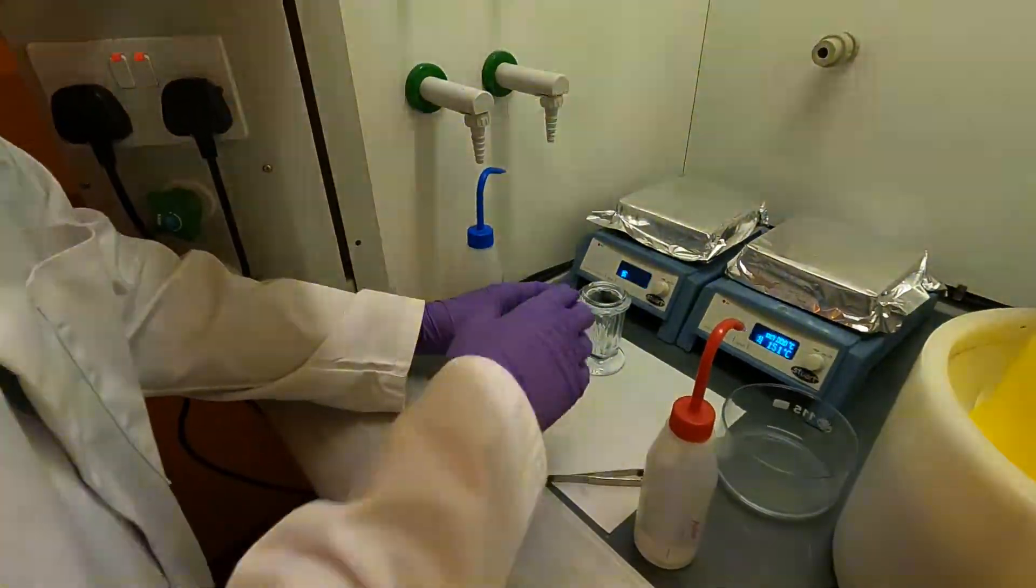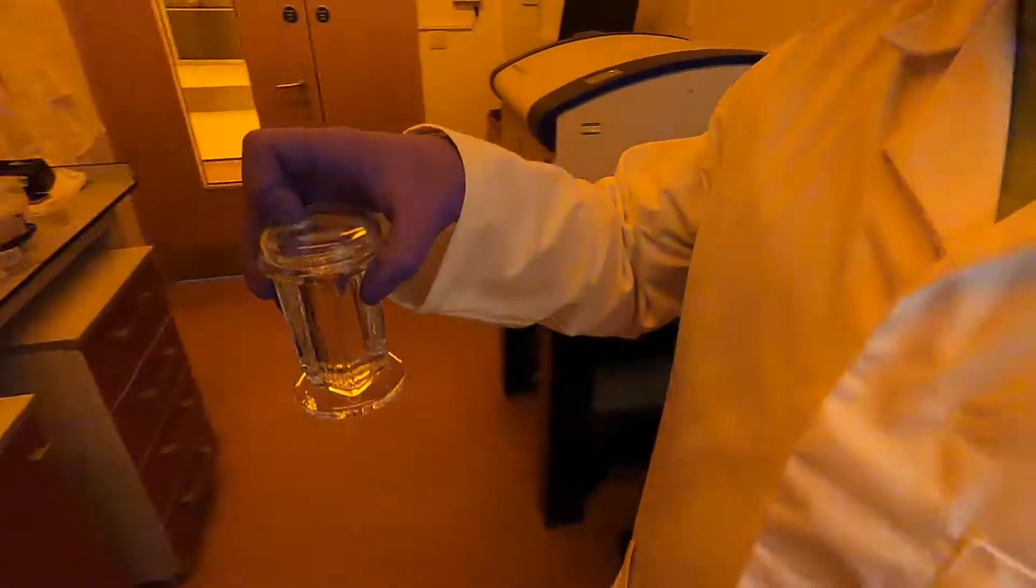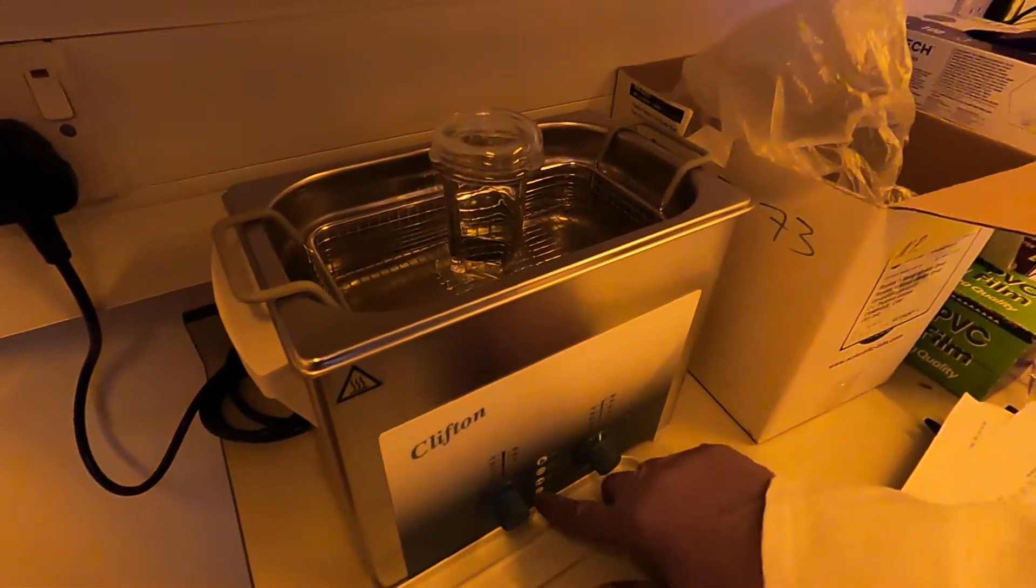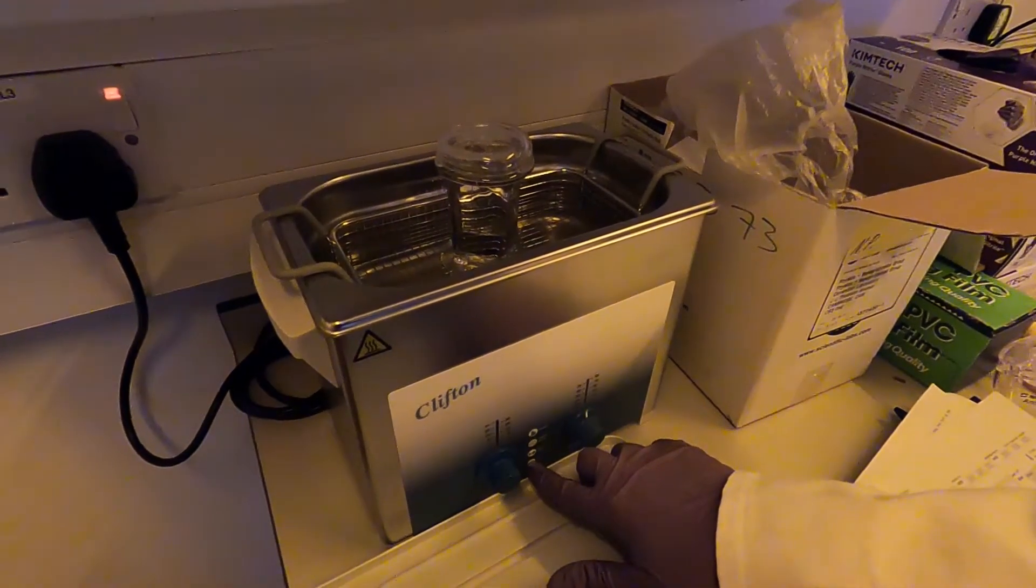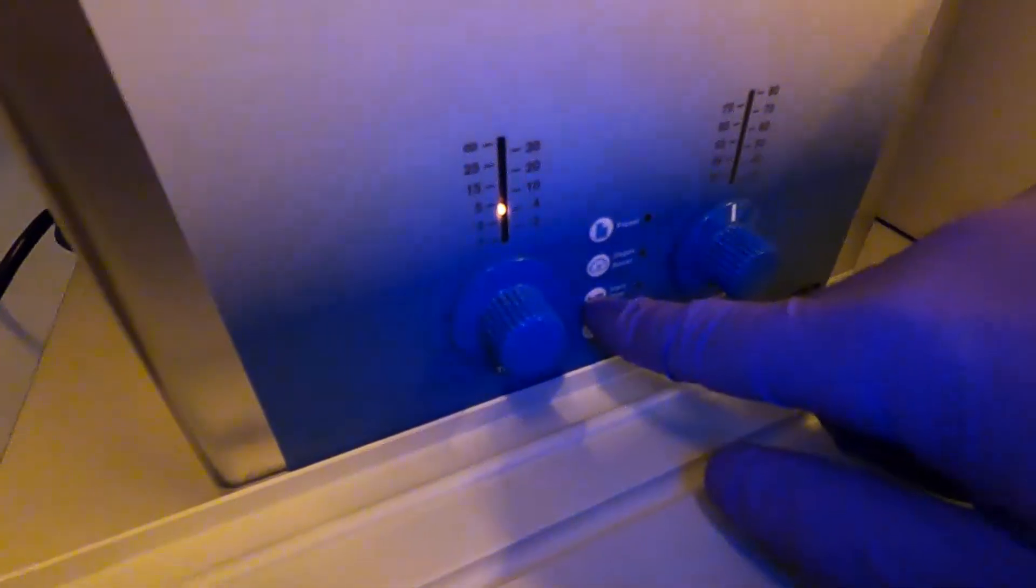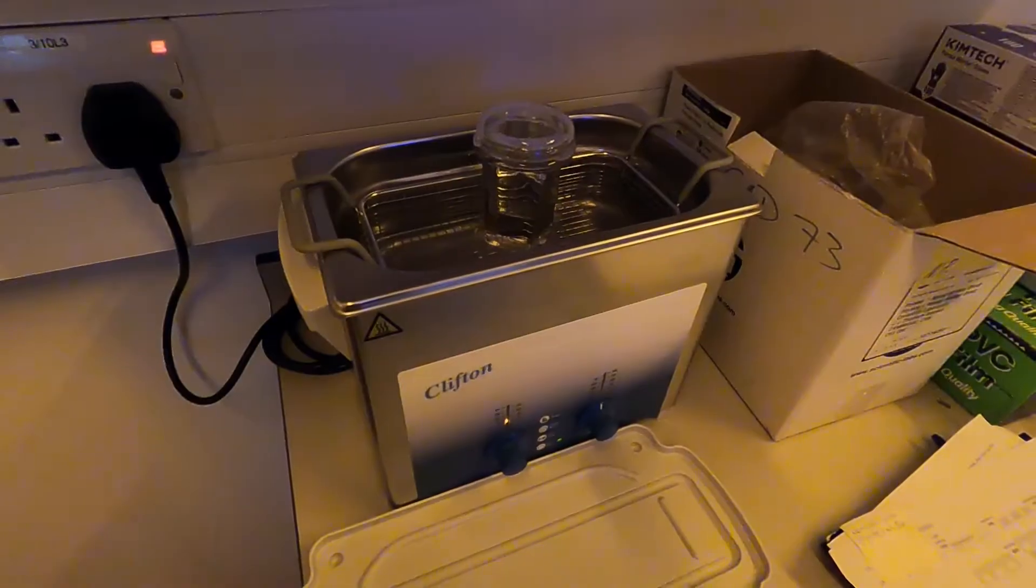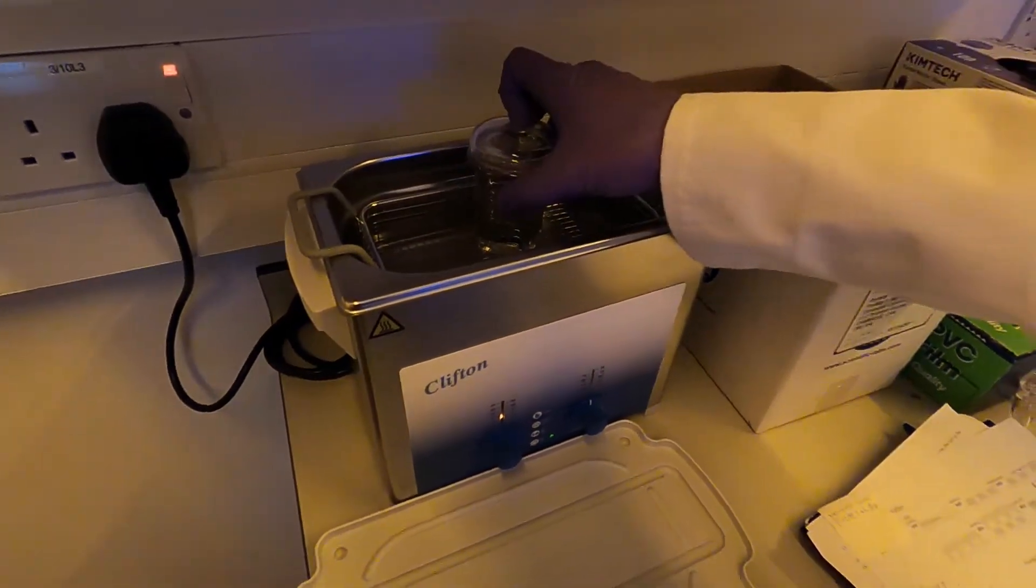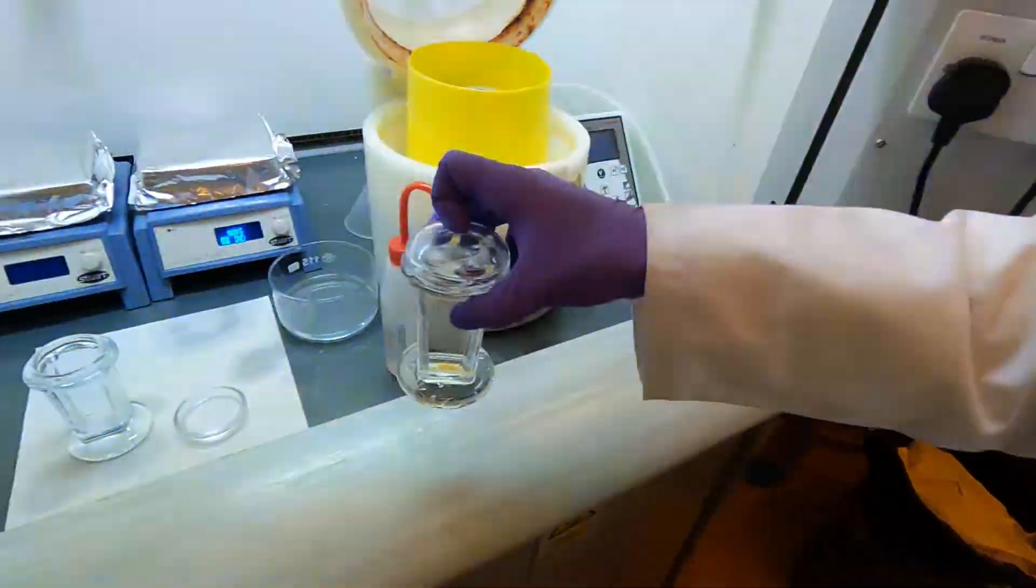Now I'm going to close the staining jar and take it over to the sonicator. I'm going to leave it here to sonicate for five minutes. I'm going to press the start button and that's going to start sonicating. Okay, this has now been sonicating in acetone for five minutes. This is now done, so I can take it out and bring it back to the fume hood.